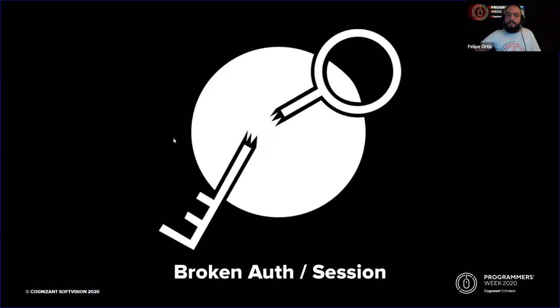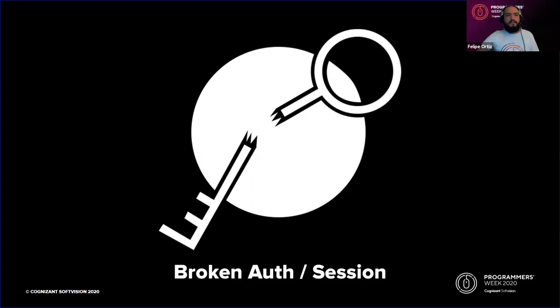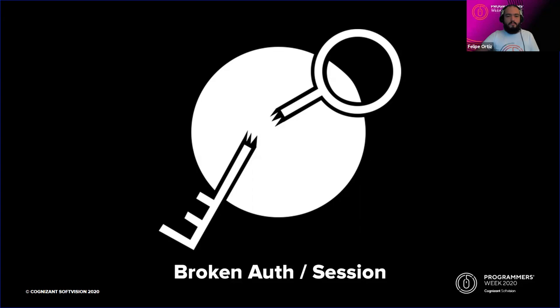Coming in second place, we have broken authentication. This type of vulnerability is still ranking in second place in the 2013 edition. Regarding its exploitability and technical impact, it's severe because it not only risks the user's credentials data, but internal organization systems may be compromised as an attacker may be able to impersonate other users and jeopardize our network. While the prevalence and detectability is mild, it can be detected via tools like Hydra, BurpSuite, or more specialized toolsets like Kali Linux.